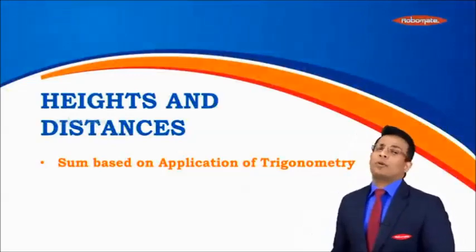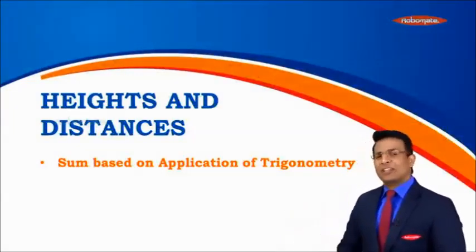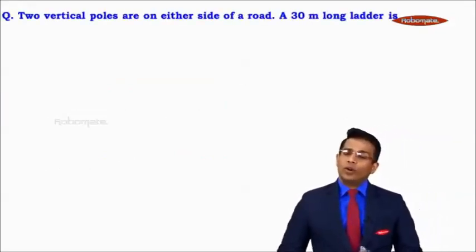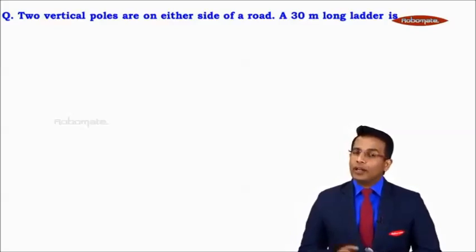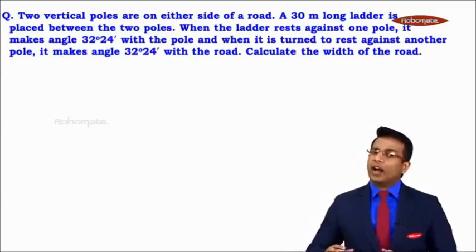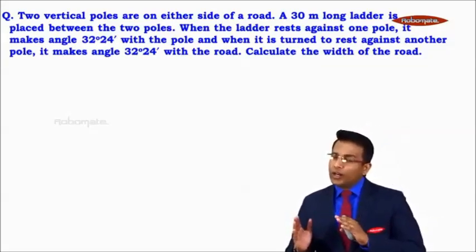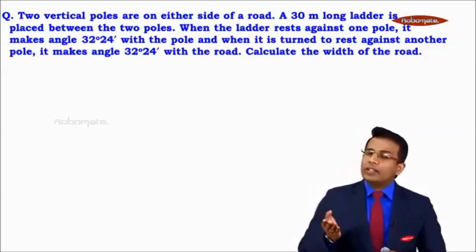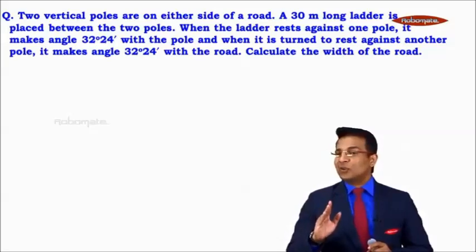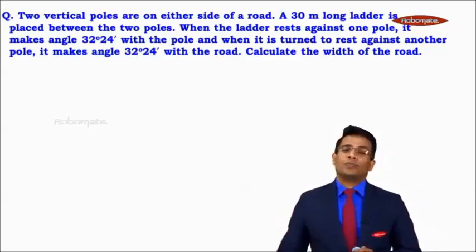Hi students. In this module from the chapter Heights and Distances, let's do a sum based on application of trigonometry. It says: two vertical poles are on either side of a road. A 30-meter long ladder is placed between the two poles. When the ladder rests against one pole, it makes an angle of 32 degrees 24 minutes with the pole, and when turned to rest against the other pole, it makes 32 degrees 24 minutes with the road. Calculate the width of the road.